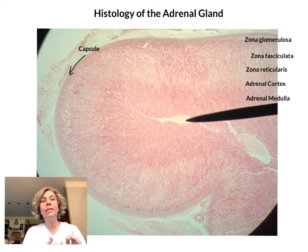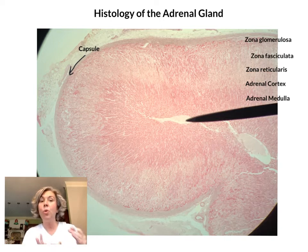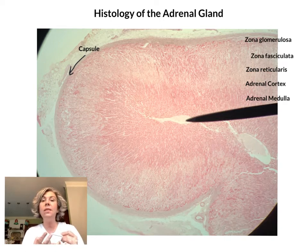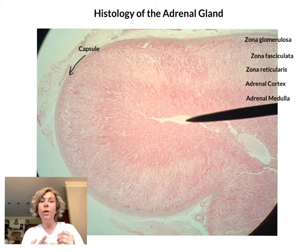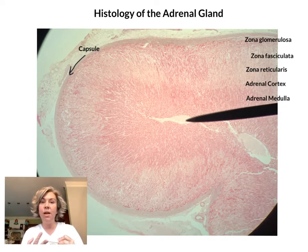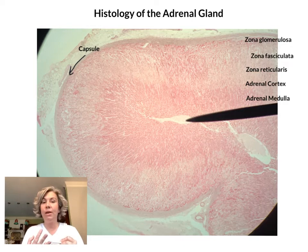Just underneath the capsule we begin the adrenal cortex. There are three zones within the adrenal cortex: the zona glomerulosa, zona fasciculata, and the zona reticularis.